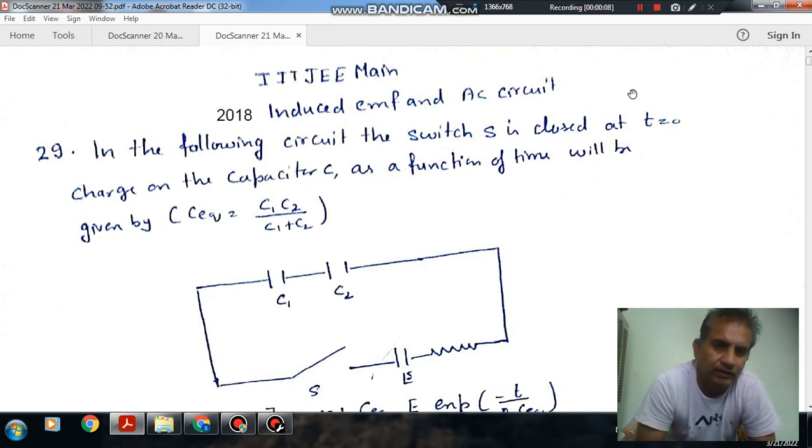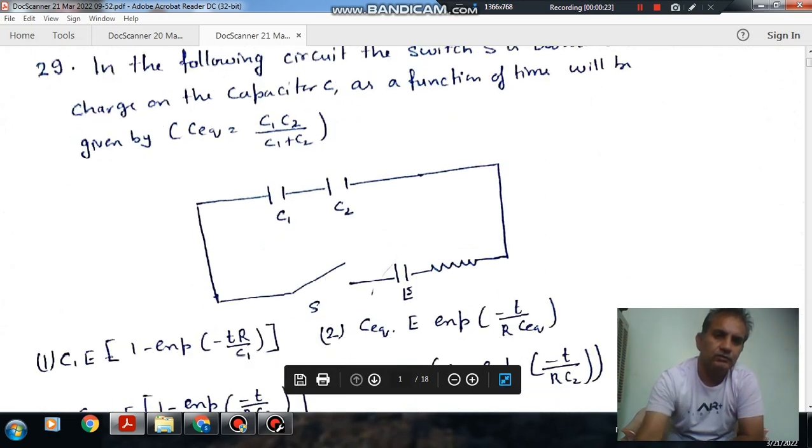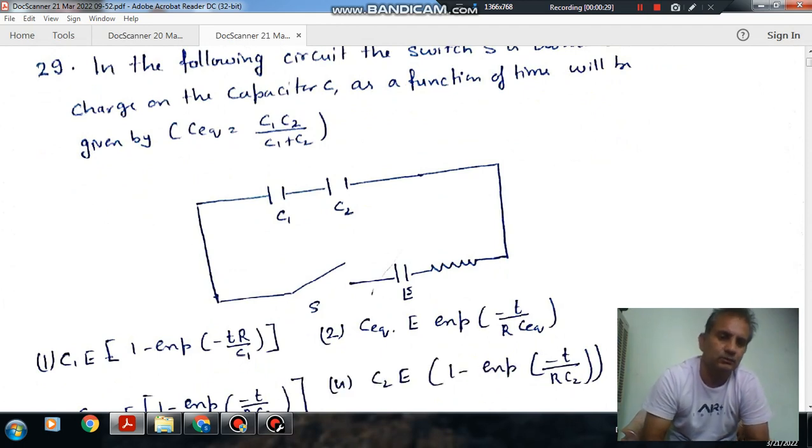Question number 29: In the following circuit, switch S is closed at T equals 0. Charge on the capacitor C as a function of time will be given by C equivalent equals C1 C2 divided by C1 plus C2.